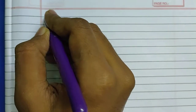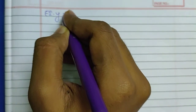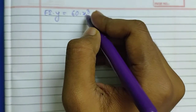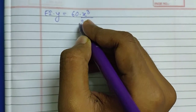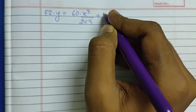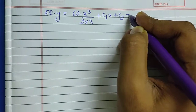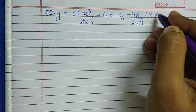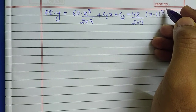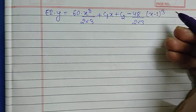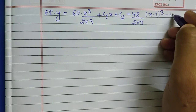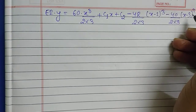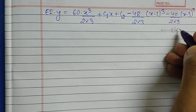Integrating again to get deflection y: EI times y equals 60 times x cubed divided by (2 times 3), plus C1·x plus C2, minus 48 divided by (2 times 3) times (x minus 1) cubed, minus 40 divided by (2 times 3) times (x minus 3) cubed. This becomes our Equation 4.